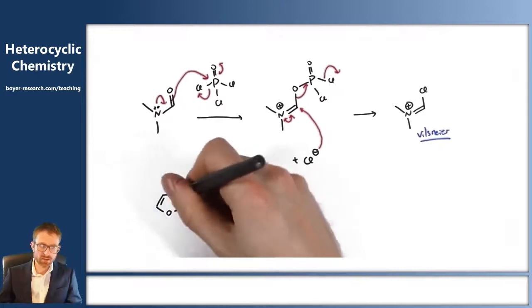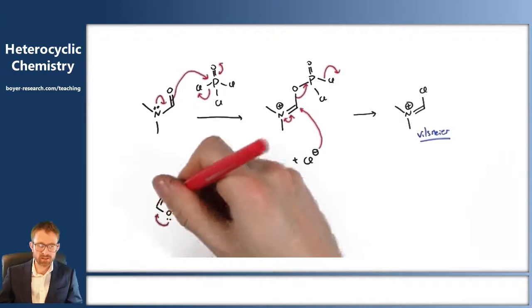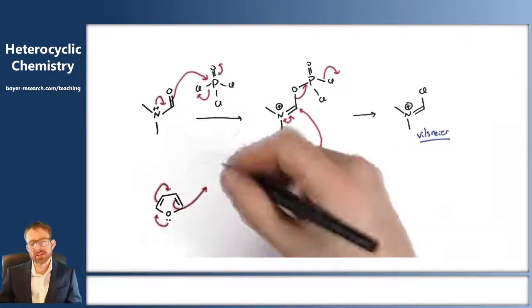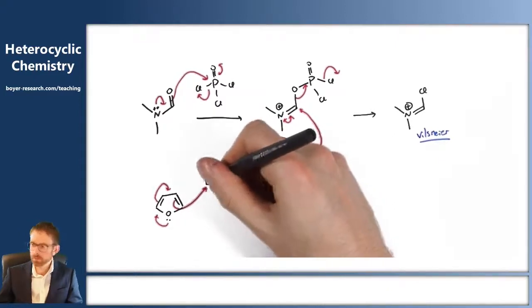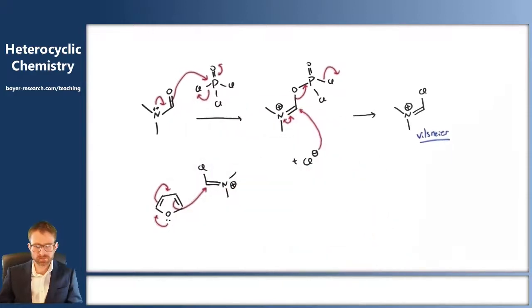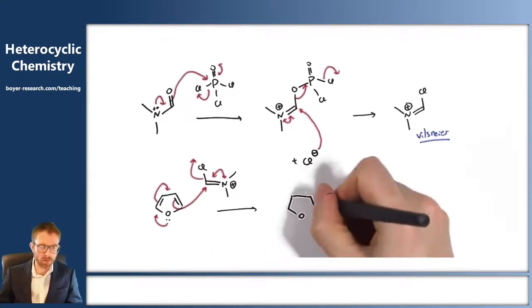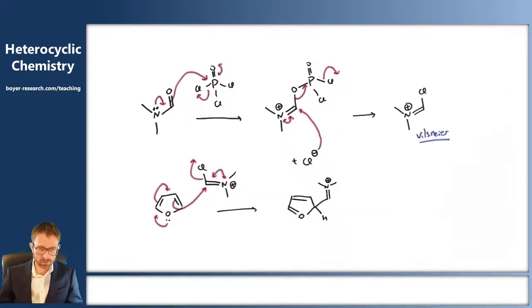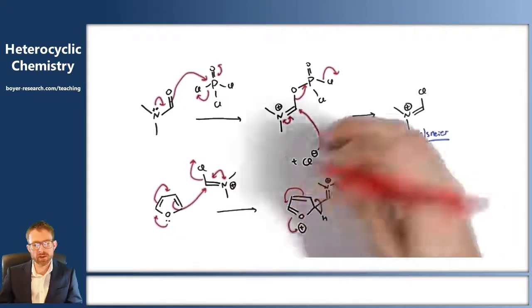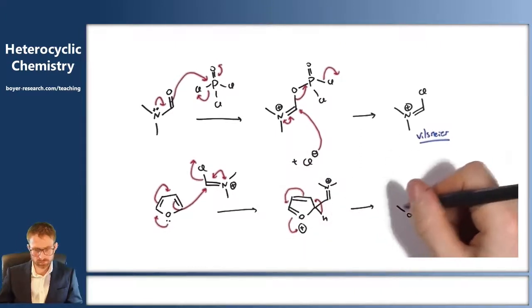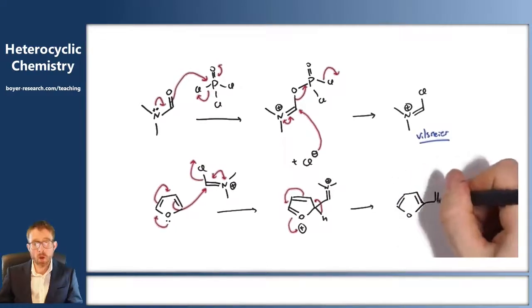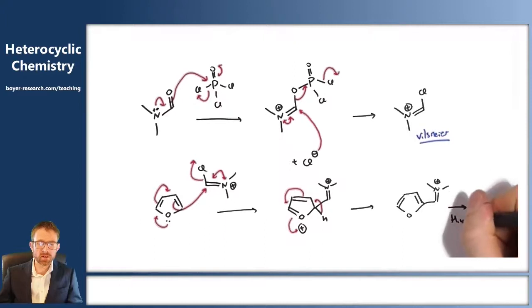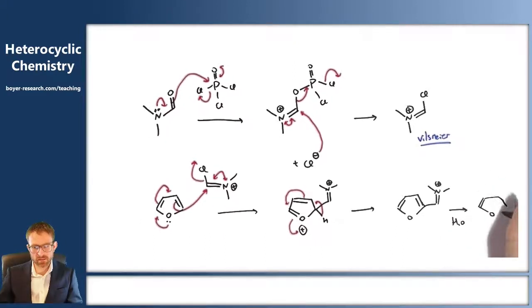The Vilsmeier reagent has a permanent positive charge, so if we introduce a suitable nucleophile such as our furan system, we can draw the lone pair going around the whole system, giving us a more stabilized intermediate. It will attack the Vilsmeier reagent, and we get loss of the chloride — a good leaving group — to make a new carbon-carbon bond. We've broken the aromatic system, but we can regain aromaticity by pushing the electrons all the way around following the loss of our H. When we work up this reaction, the water used for the workup will hydrolyze our iminium back to an aldehyde.